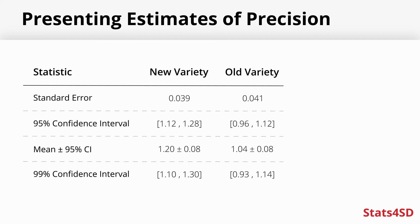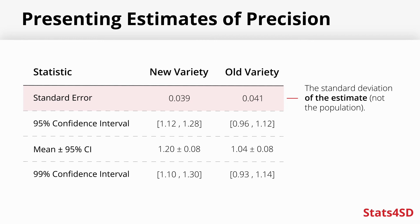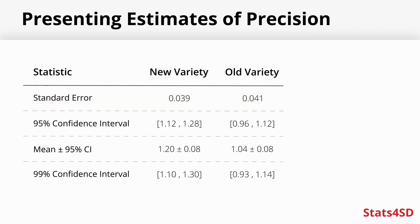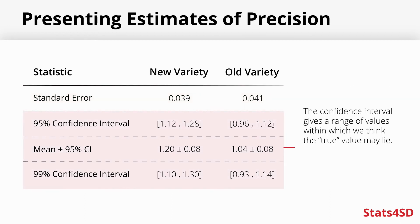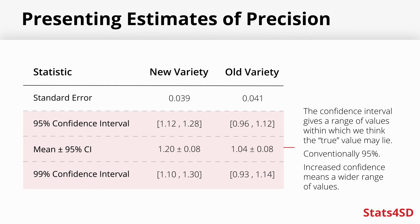For precision, we often think about standard errors or confidence intervals. The standard error is the standard deviation of the estimate itself — not of the population — so it is linked to the standard deviation but also to the sample size. As we increase the sample size, our standard error gets smaller. We typically use the standard error in conjunction with a confidence interval, which gives us a range of values where we think the true value of what we are estimating may lie. Conventionally we use a 95% confidence interval, though 90% gives a narrower interval and 99% gives a wider one.